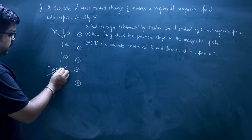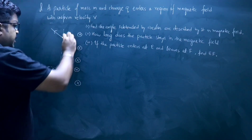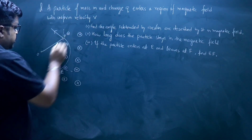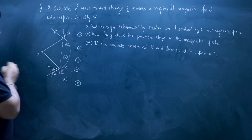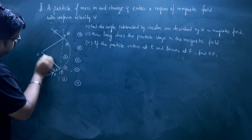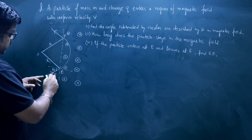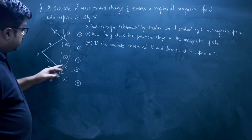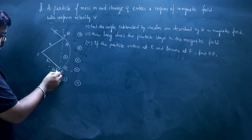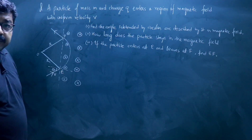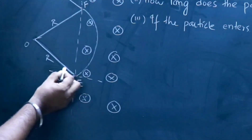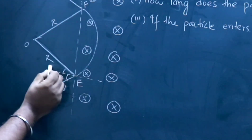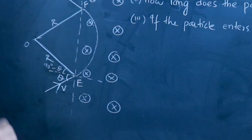The particle moves along this path, and for this arc suppose the center is O, so this is the radius R. This line is just like a tangent to this circle, so the entire angle between the radius and the tangent is 90 degrees. If this entire angle is 90 degrees and this angle is theta, then the angle made by this radius with the normal will be 90 degrees minus theta.